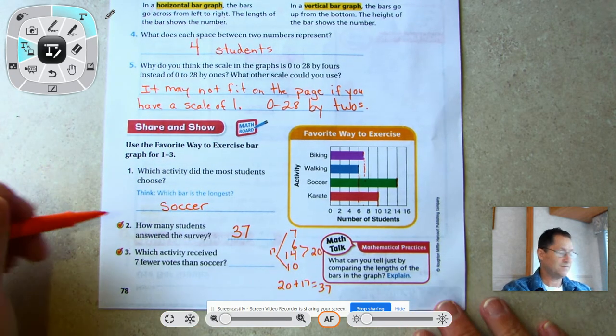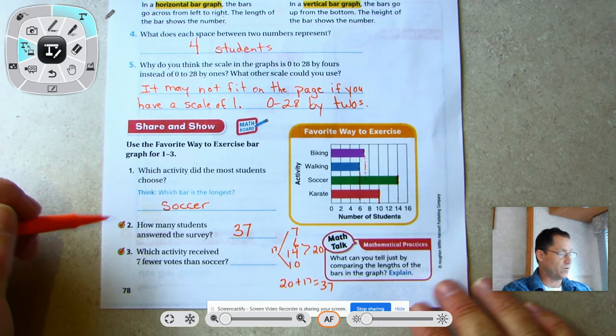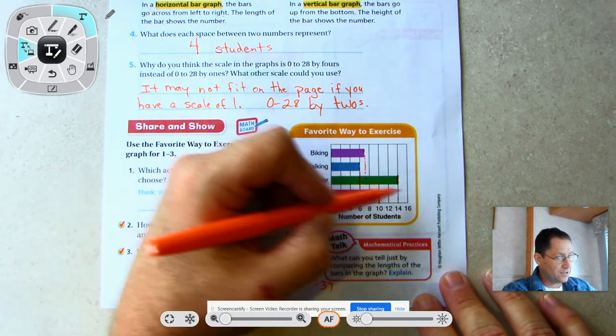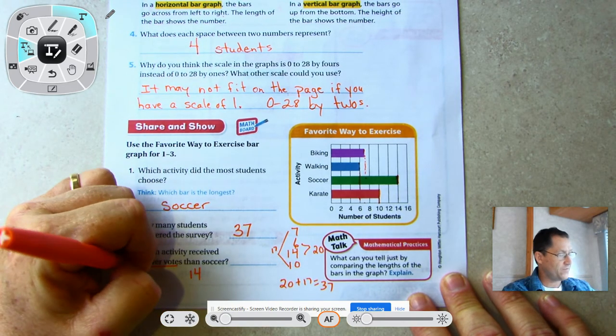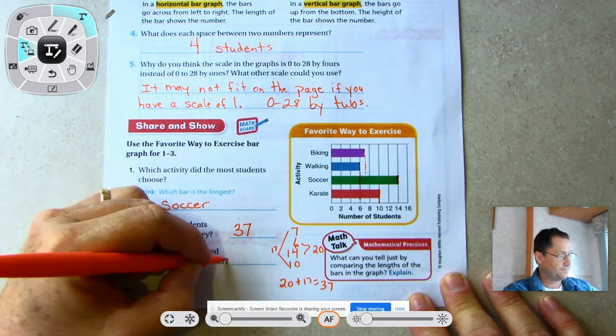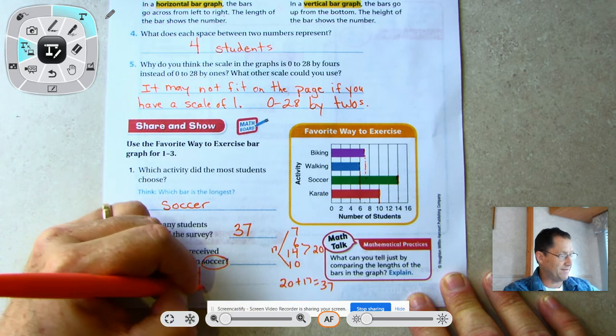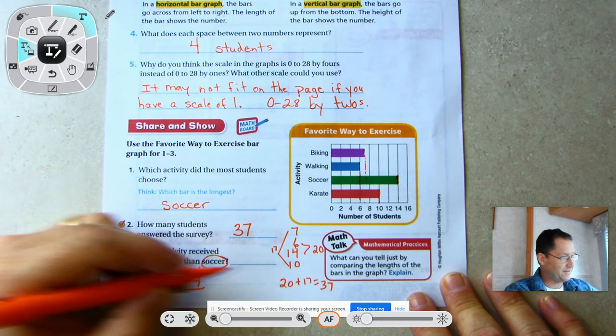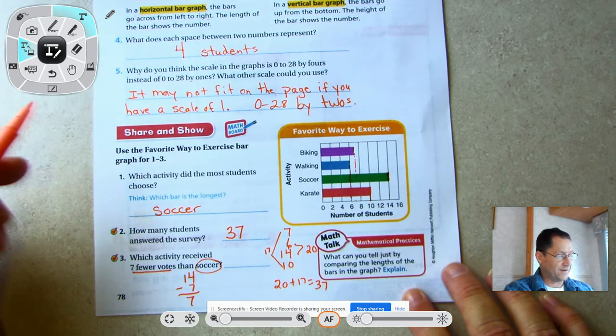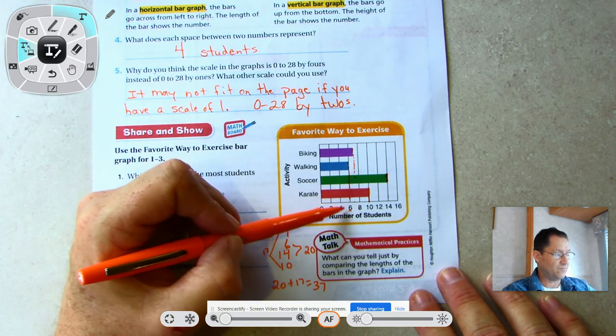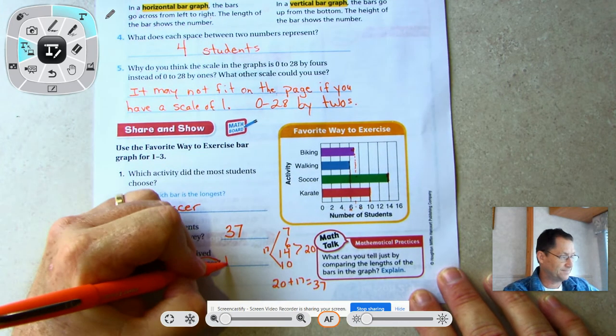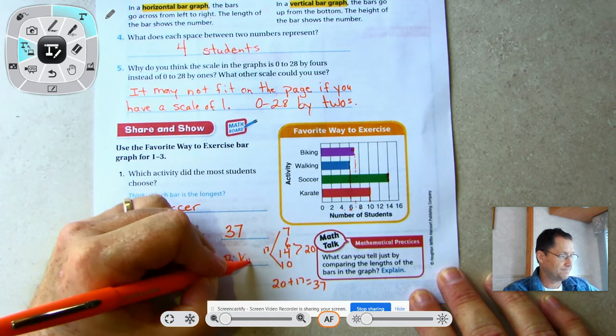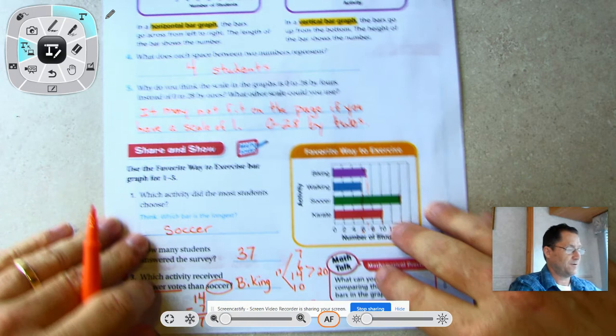Which activity received seven fewer votes than soccer? Go to soccer - 14. Fourteen minus seven is seven. So we've got to find the one that is seven. Seven is in between six and eight, which one is in between? Biking.